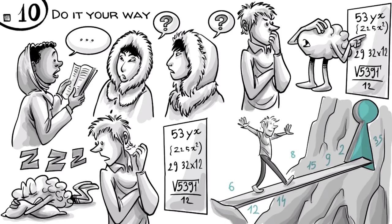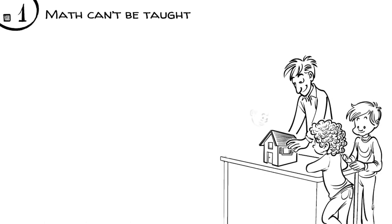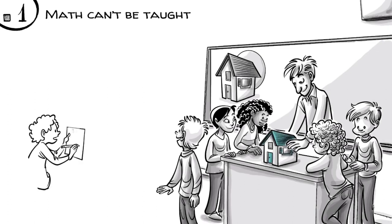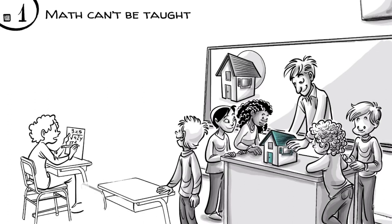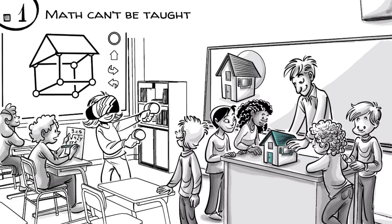Which brings us back to rule one. Math can't be taught, it has to be constructed. If we want to learn math, we have to do math in our heads, ideally with real-life experiences. Later, we replace the objects with abstractions such as language, symbols or whatever the future might bring.